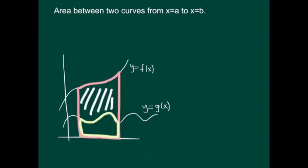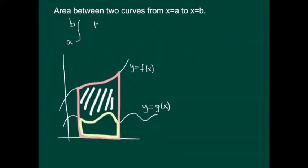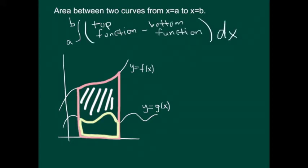The important thing for the formula is that you take the top function and subtract off the bottom function. The fact that I labeled them f and g shouldn't affect the formula, so the way I like to write it is: top function minus bottom function, then take the definite integral of the resulting quantity.